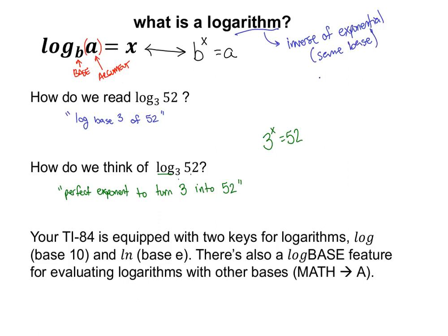We're able to swap between an exponential and a logarithmic expression. The reason they're so closely related is that they undo or invert one another. A logarithm is the inverse of an exponential, provided they have the same base. Just like in algebra where x plus 3 equals 7 is solved by subtracting 3, if I've got 3 to the x equals 52, I use a logarithmic base of 3 on both sides. The logarithm with base 3 cancels the exponent with base 3, giving x equals log base 3 of 52.